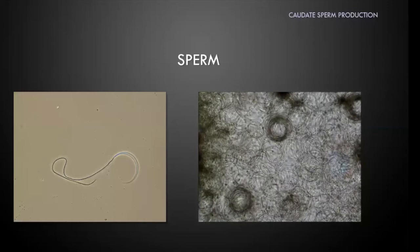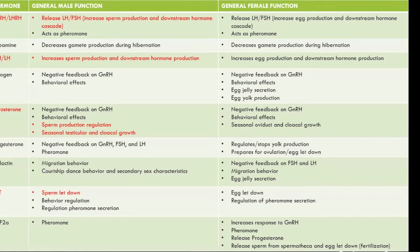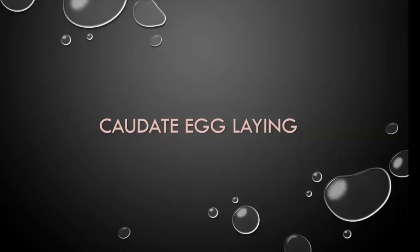Salamander sperm exhibits very atypical movements. When it actually hits the egg it will flagellate normally, but until then it often just spins in circles — it's fascinating to watch. Highlighted in red in the hormone table are the hormones that help in sperm production, for your reference.